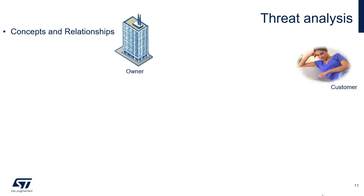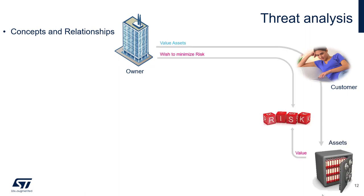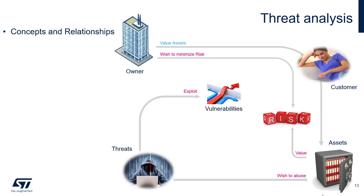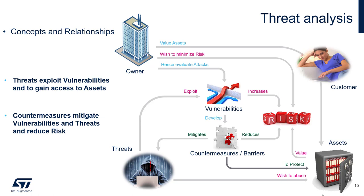Now let's analyze the concepts and relationships in a threat model. You have a company making an asset that a customer will value. The company wants to minimize risk and protect the value of the asset. There are threats looking to exploit vulnerabilities in order to abuse these assets. With increased vulnerabilities, there is increased risk. Threats exploit vulnerabilities to gain access to assets, while countermeasures and barriers are developed to make a system less vulnerable and reduce risk.